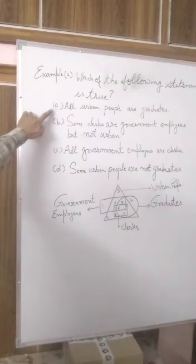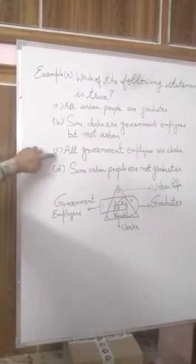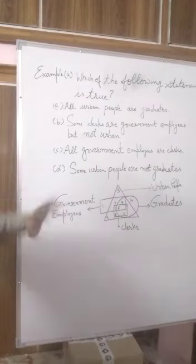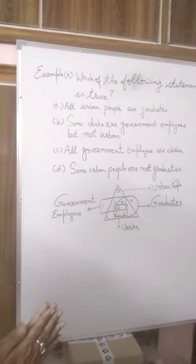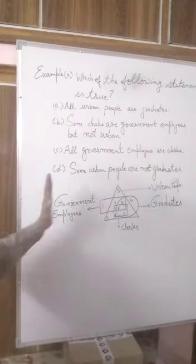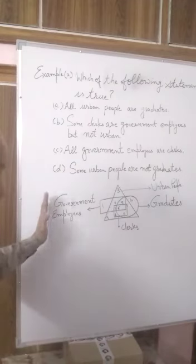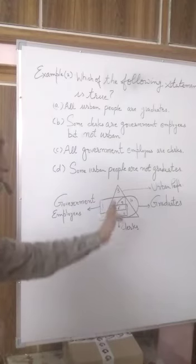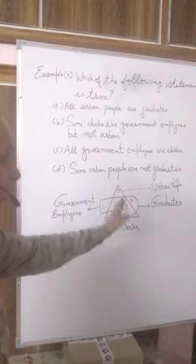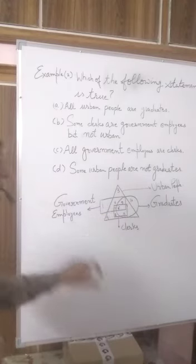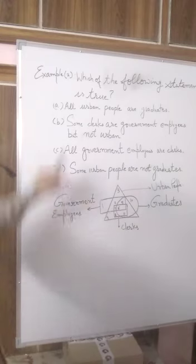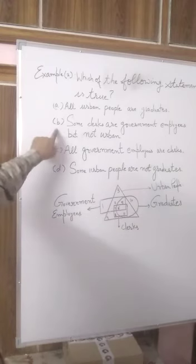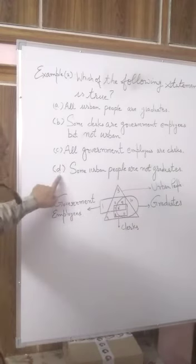If we see carefully again, options A and C use 'all,' meaning all four figures would need to be included — which is not possible because rectangle is outside the triangle and circle is also outside the triangle. So only options with 'some' remain, leaving us with option B and option D.